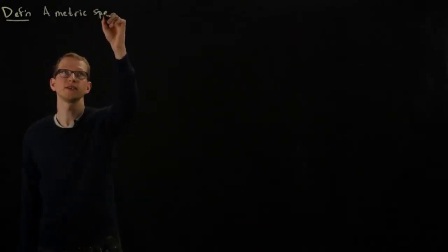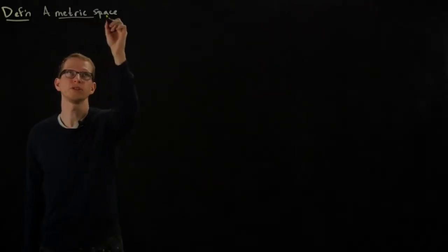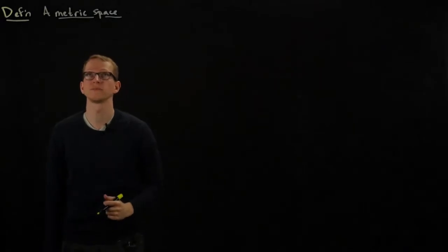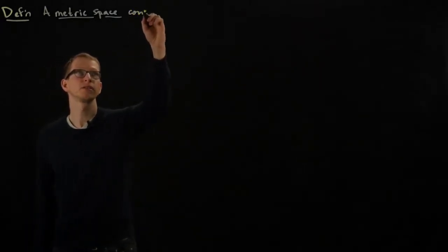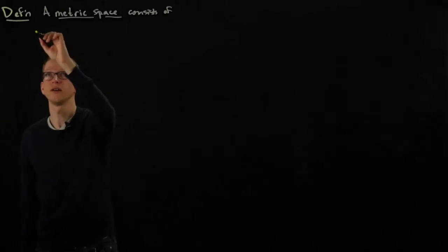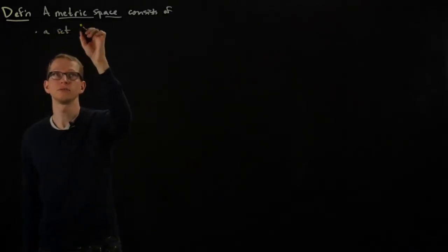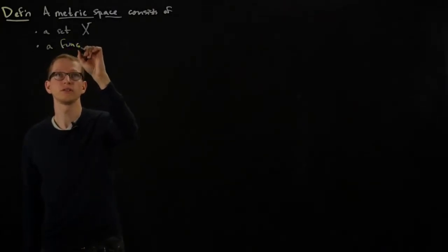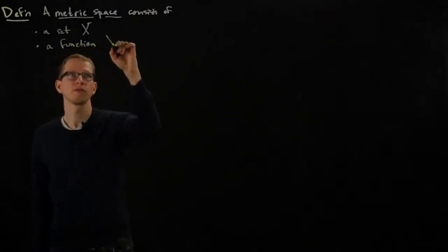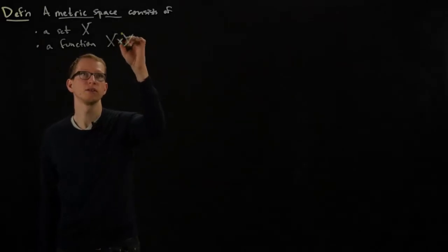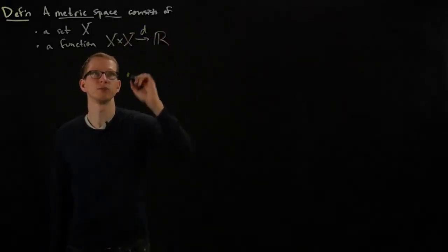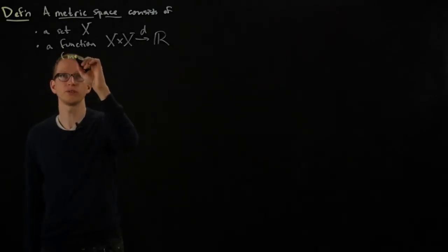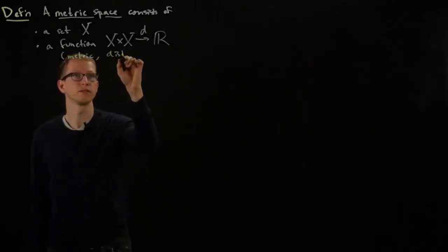So a metric space consists of data, and then that data has to satisfy a bunch of conditions. A metric space consists of a set, which we write for now as X, and a function from X cross X to the set of real numbers, which we denote by d. Sometimes this function is also called a metric or a distance function.